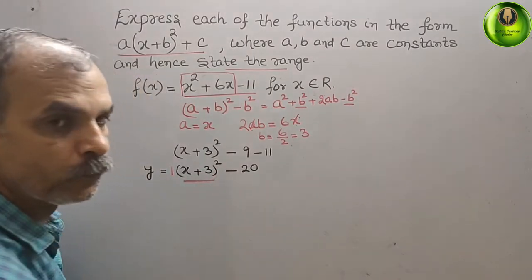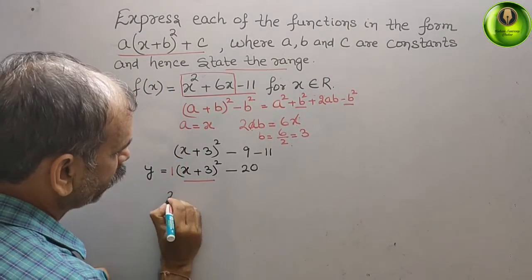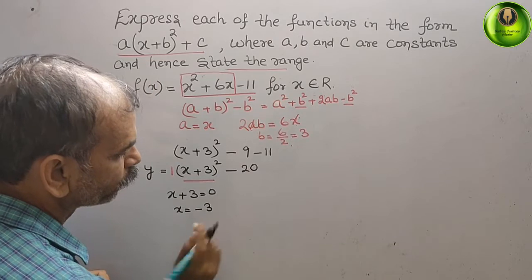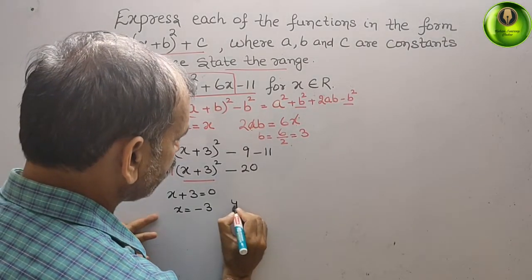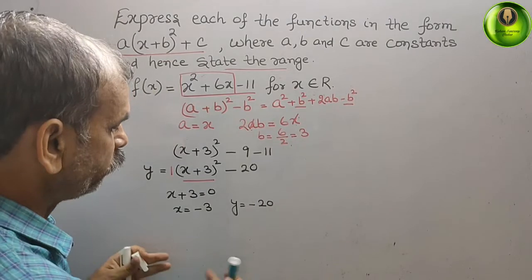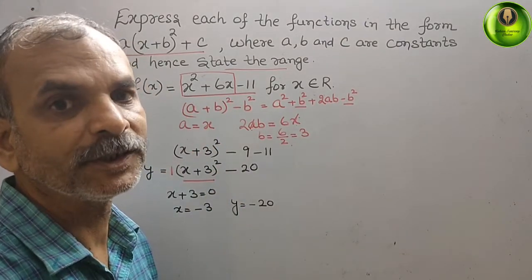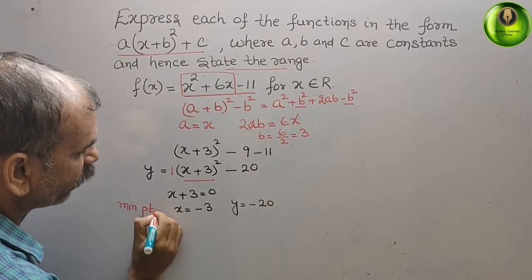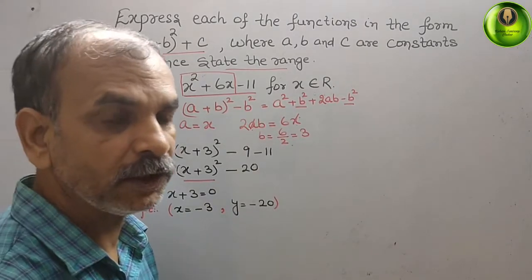To find the minimum point, we set (x + 3)² = 0, which gives x + 3 = 0, so x = -3. The corresponding y value is -20. Therefore, the minimum point (vertex) is (-3, -20).